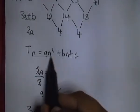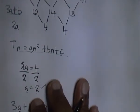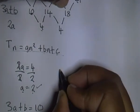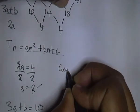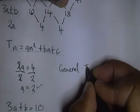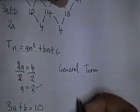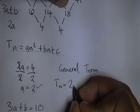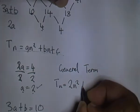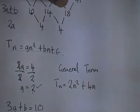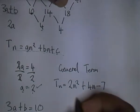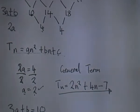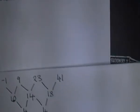We are now going to substitute it into the formula. The general term is going to be T of N is equal to 2N squared plus 4N minus 7. And there we have it. That is the general term of this quadratic sequence.